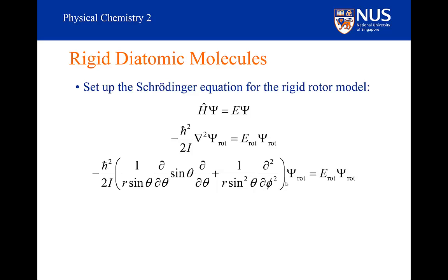The atomic orbitals are the product of two components, a radial component and an angular component. Well, in our rigid diatomic, the radius is fixed, so there is no radial component. So the angular components for the atomic orbitals are the solution to this equation.